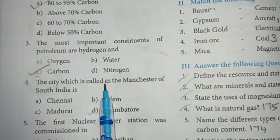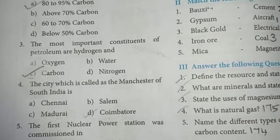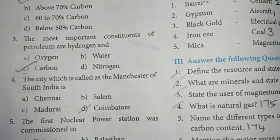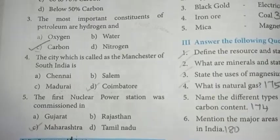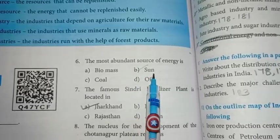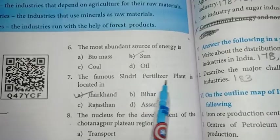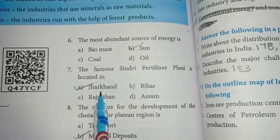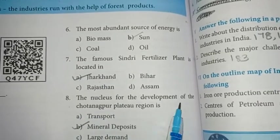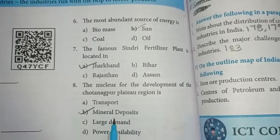Number 4: the city which is called the Manchester of South India is Coimbatore. Answer is D option. Fifth one: the first nuclear power station was commissioned in Maharashtra, option C. Number 6: the most abundant source of energy is the Sun, option B. Seventh: the famous Sindri fertilizer plant is located in Jharkhand, option A. Eighth: the nucleus for the development of the Chotanagpur plateau region is mineral deposits, option B.